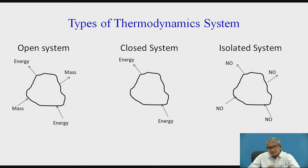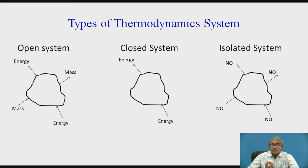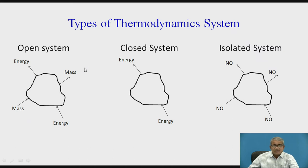When you go for a closed system, there is a piston-cylinder arrangement. Here only energy transmission takes place; mass remains constant — that is called a closed system. Only energy is transmitted. In the open system, mass and energy both are transmitted — mass is entering and leaving, energy is entering and leaving. In the closed system, only mass remains constant and only energy is transmitted in and out.